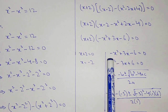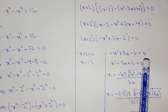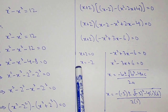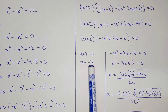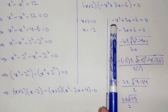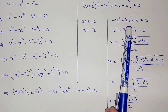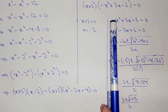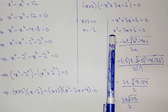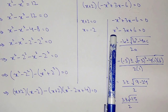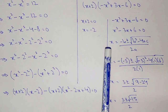Now here we have two equations: x plus 2 equal to 0, giving x equal to minus 2 as the first value. The second equation is minus x squared plus 3x minus 6 equal to 0. Dividing by minus 1, we get x squared minus 3x plus 6 equal to 0.